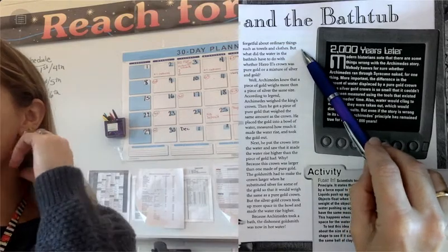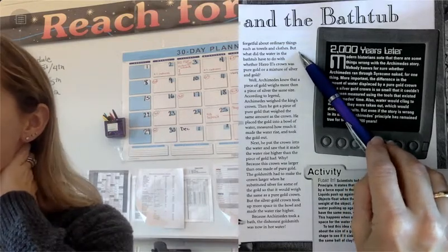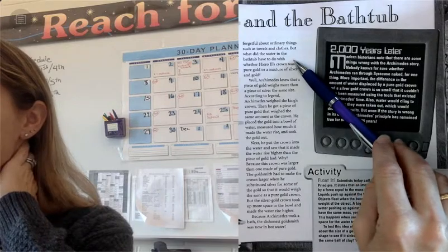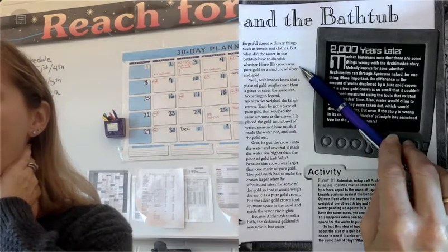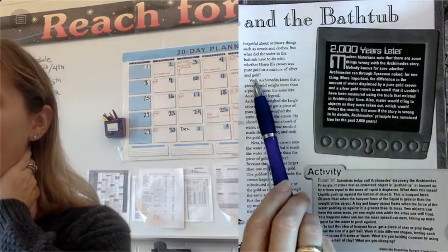But what did the water in the bathtub have to do with whether Hero II's crown was pure gold or a mixture of silver and gold? Well.